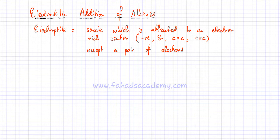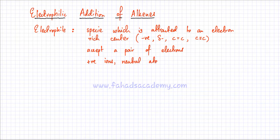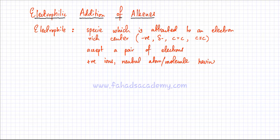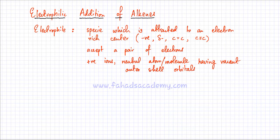Which species could be electrophiles? The first type is positive ions, because positive ions attract electrons. The second type is a neutral atom or molecule where one specific atom has vacant outer shell orbitals, so it can attract electrons and place them into those vacant orbitals.